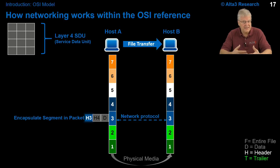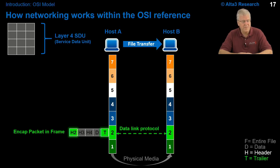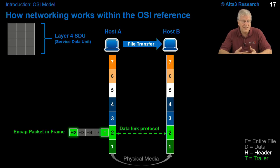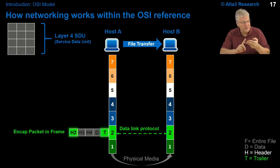That packet is passed down to the next layer as a service data unit. This time the encapsulation is different — there is both a header and a trailer. Layer 2 has a very important responsibility distinctive from the other layers: it must detect errors, though not necessarily correct them. The trailer contains a mathematical value that, once received at the other end, can be used to test whether the frame was damaged. This protocol data unit is called a frame because it has both a header and a trailer. So we have four important PDUs: the segment at layer 4, the packet at layer 3, and now the frame at layer 2.